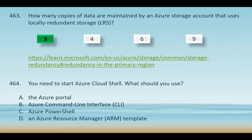Question number 464. You need to start Azure Cloud Shell. What should you use? Your options are the Azure portal, Azure CLI, Azure PowerShell, and Azure Resource Manager ARM template. The primary way to launch Cloud Shell is through the Azure portal — you can find the Cloud Shell icon at the top right corner of the portal. While you can use the CLI inside Cloud Shell, the CLI itself does not launch Cloud Shell. Similarly, Cloud Shell provides a PowerShell environment, but PowerShell itself does not start Cloud Shell. ARM templates are used to deploy Azure resources, not to launch Cloud Shell.